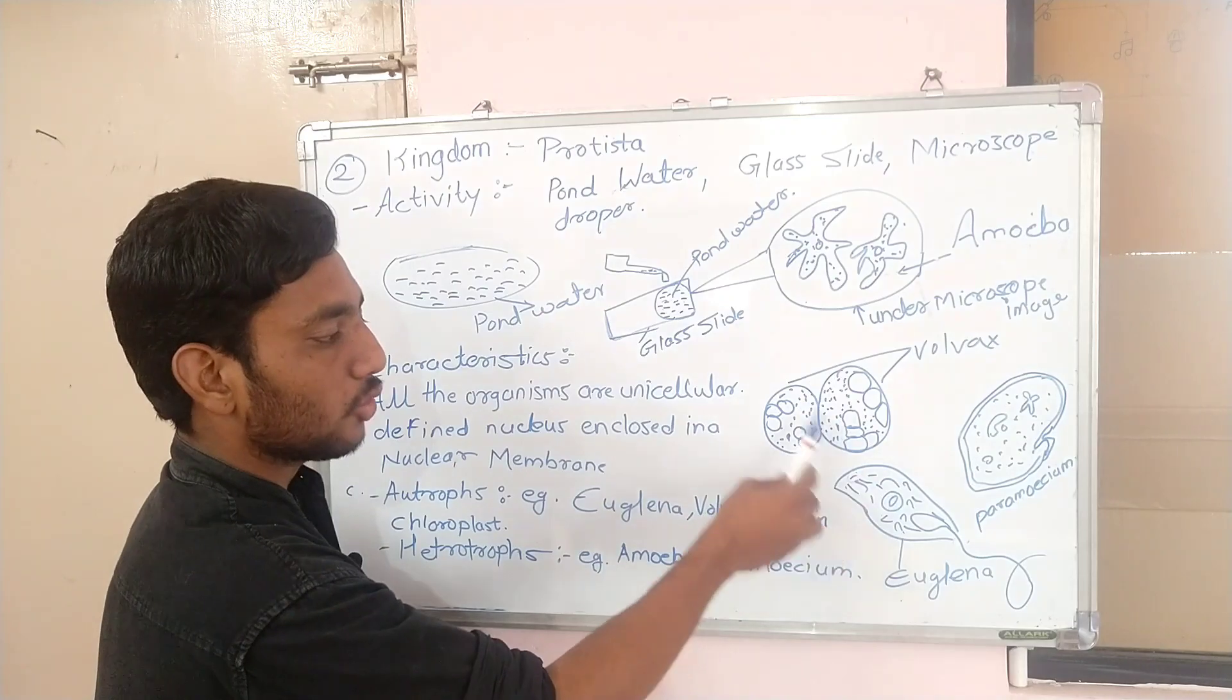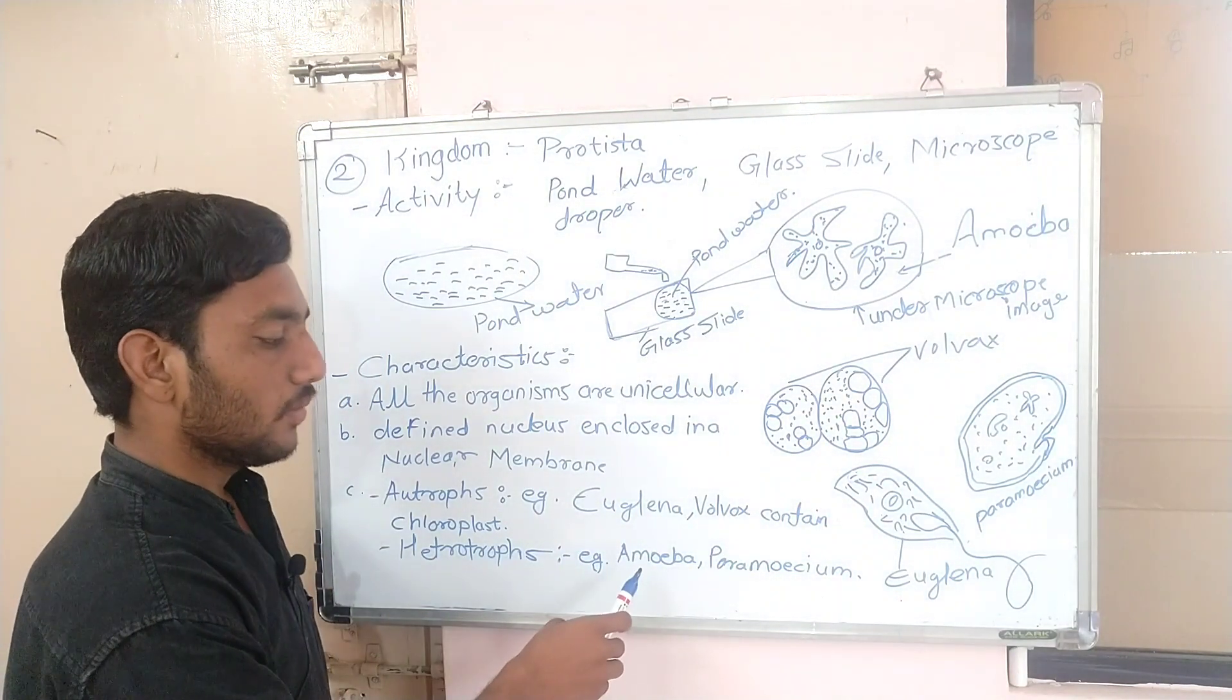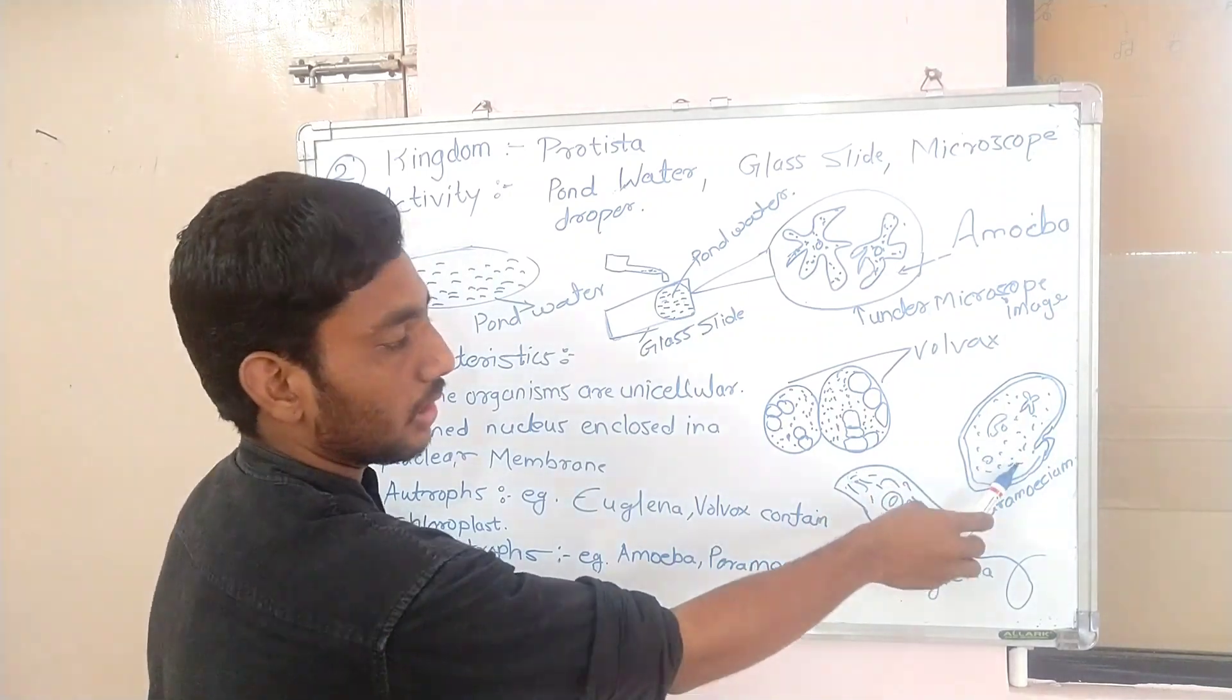These are autotrophs. Next is heterotrophs. In heterotrophs, Amoeba and Paramecium.